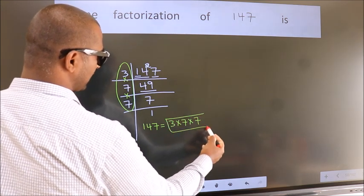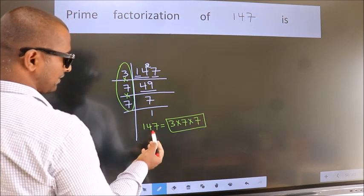This is called prime factorization of 147.